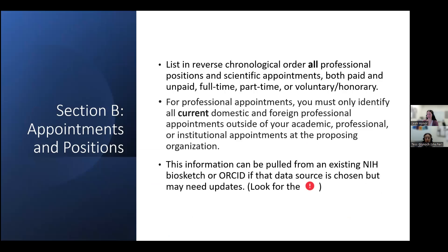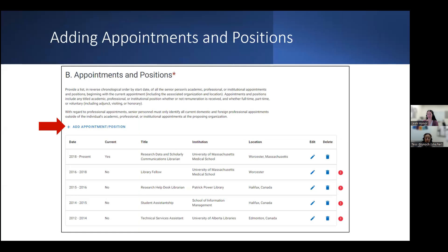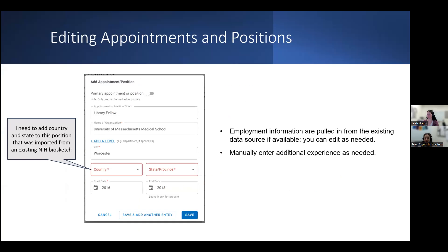For Section B, list in reverse chronological order all professional positions and types of appointments, both paid and unpaid, full-time and part-time, or voluntary or honorary. If you are short on space, you must identify all current domestic and foreign professional appointments outside of your academic, professional, or institutional appointments at the proposing organization. This information may be imported from an outside data source — just watch for missing information such as country and state, which is common when importing from an NIH biosketch.